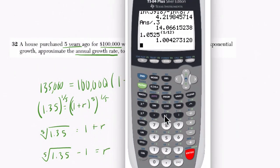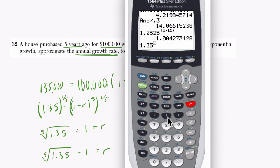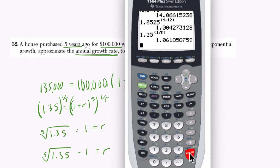So I would do the fifth root. We do 1.35 to the power of one-fifth, 1 divided by 5, hit enter, and we get 1.061858.